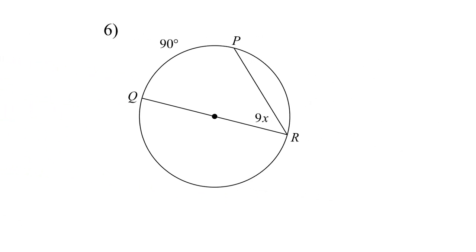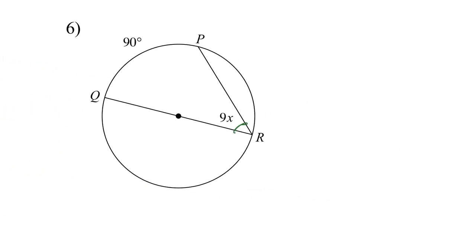And number six, again, this arc is half this angle. Sorry, this angle is half the arc. So 9X equals to one half of 90. So 9X equals to 45. Then divide by 9. So X equals to 5 degrees.